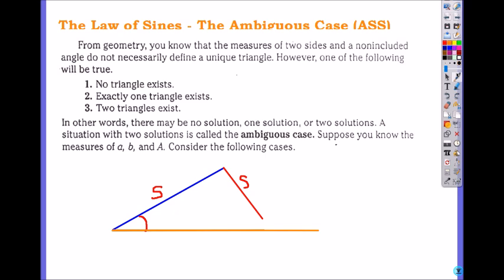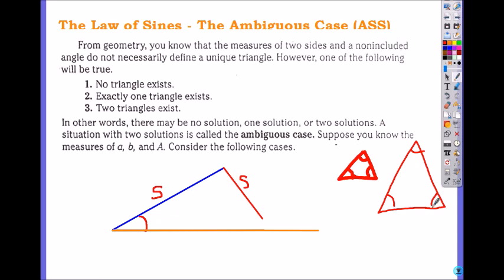What was another case that you could not prove the congruency of a triangle from geometry? Angle angle angle. Remember, if you have the same angles like 60, 60, 60, and another triangle also has 60, 60, 60, but they're not congruent — even with all equal angles. So you could not use angle angle angle to prove the congruency of a triangle.